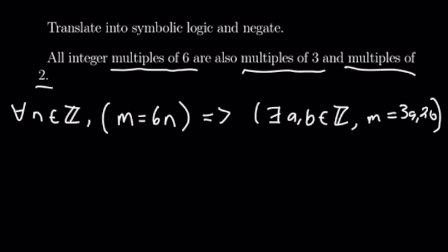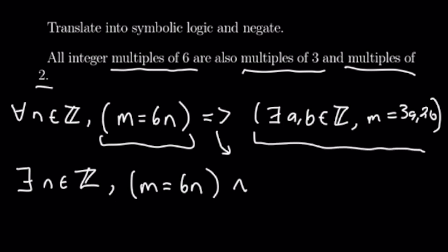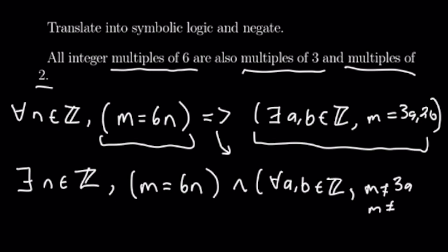So let's go ahead and negate this. First we negate the setup, so that means there exists an n which is an integer, and we keep our original statement m equals 6n. Then we turn the implication symbol into an 'and' and negate the second statement. So we have p and not q. Our not q is: for all a and b integers, m does not equal 3a and m does not equal 2b.